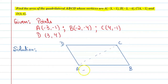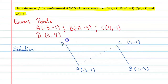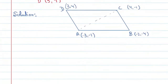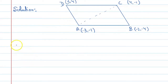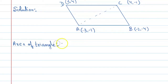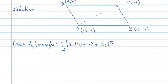So: A coordinate is (-3, -1), B coordinate is (-2, -4), C coordinate is (4, -1), and D coordinate is (3, 4). To find the area of triangle ABC, we use the formula: area of triangle = half times modulus of [x1(y2 - y3) + x2(y3 - y1) + x3(y1 - y2)].